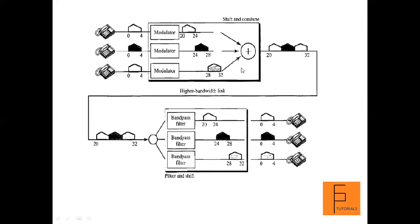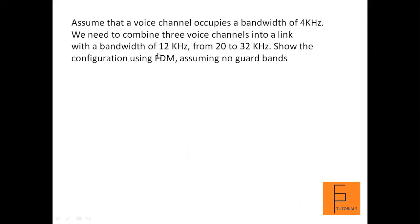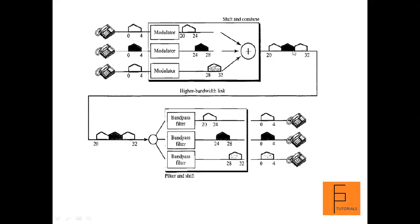These modulated signals are combined in the multiplexer to produce a composite signal with a range of 20 to 32 kHz — 20 because that is the lowest range among the three modulated signals and 32 is the highest. This composite signal is then transmitted through a high-bandwidth link of 12 kHz. At the receiving end, the composite signal goes through filters.